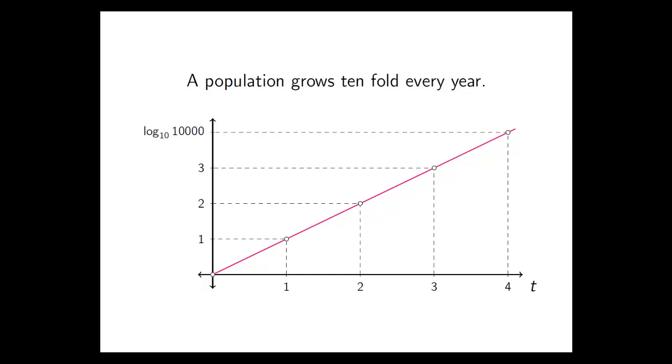In fact, 4 is the same as the logarithm base 10 of 10,000. 3 is the logarithm base 10 of 1000. We saw earlier log base 10 of 100 is 2. And similarly, log base 10 of 10 turns out to be 1. So we refer to this kind of picture as a log linear plot. That the vertical axis represents the logarithm of the population size. And the horizontal axis is an ordinary linear scale, like a ruler.